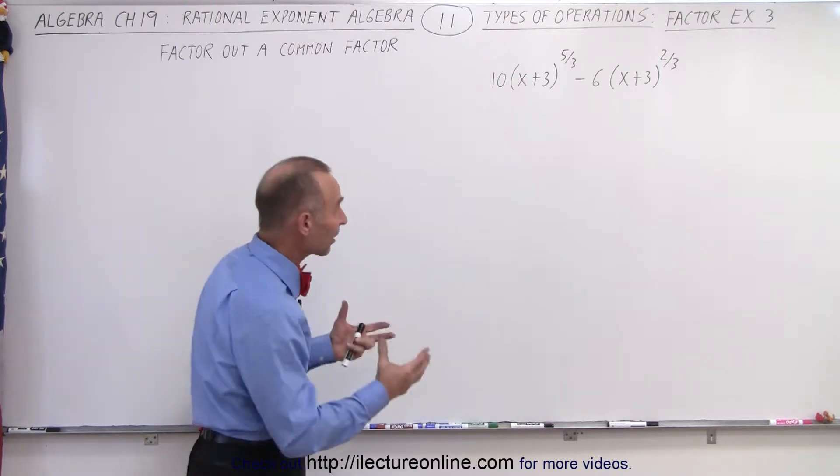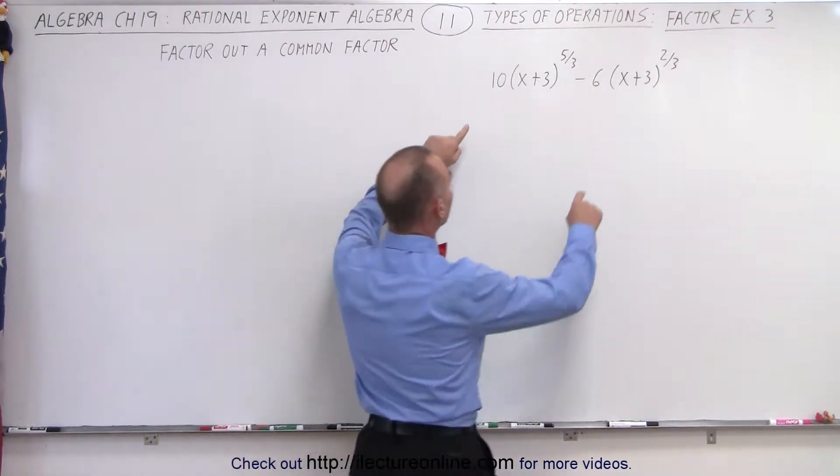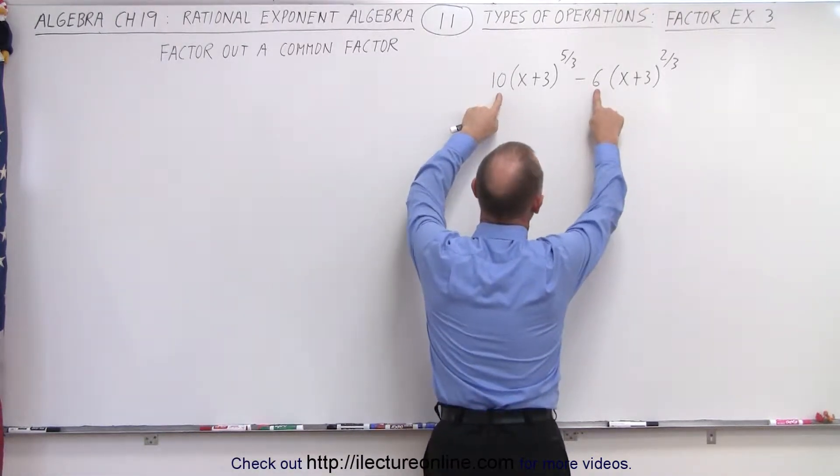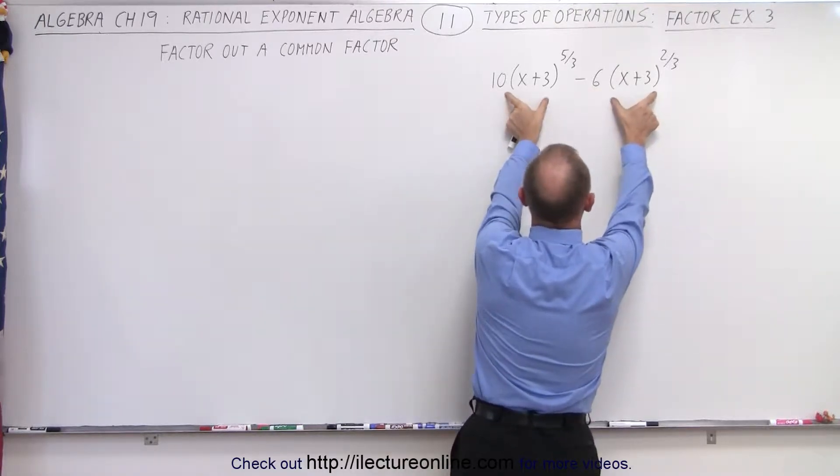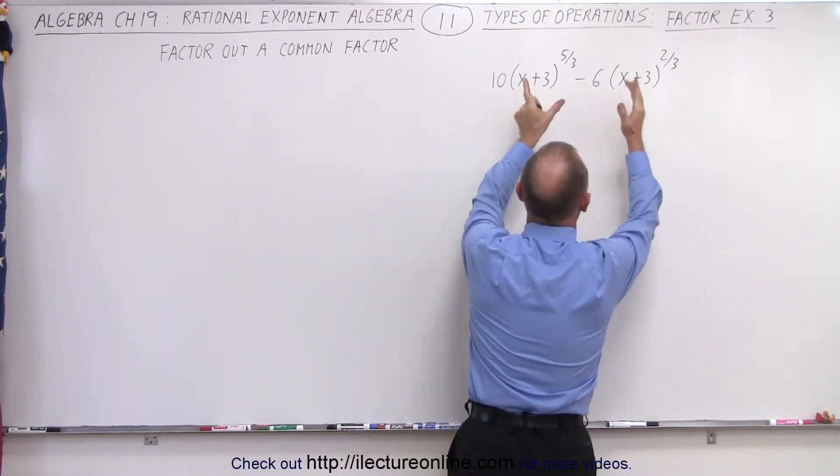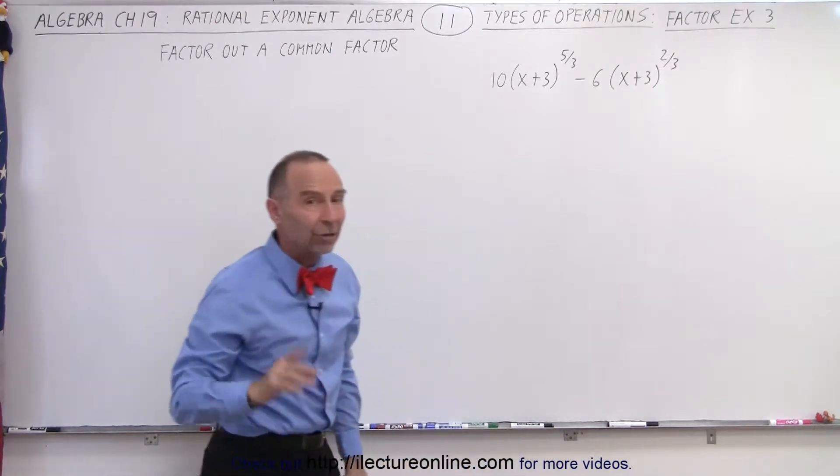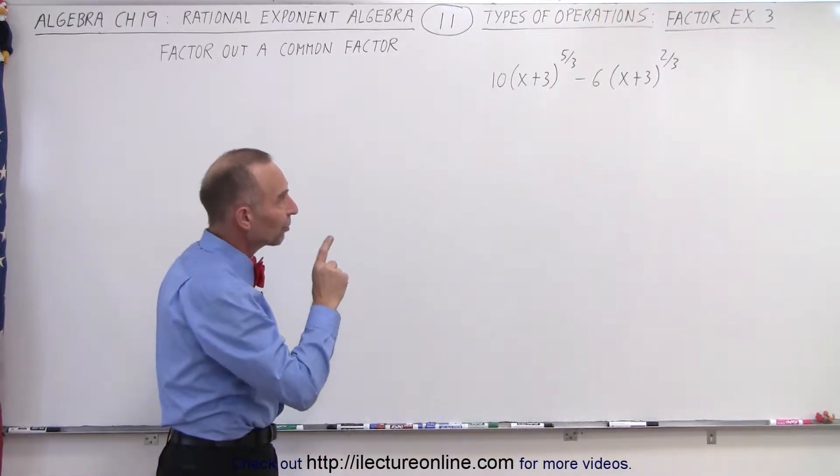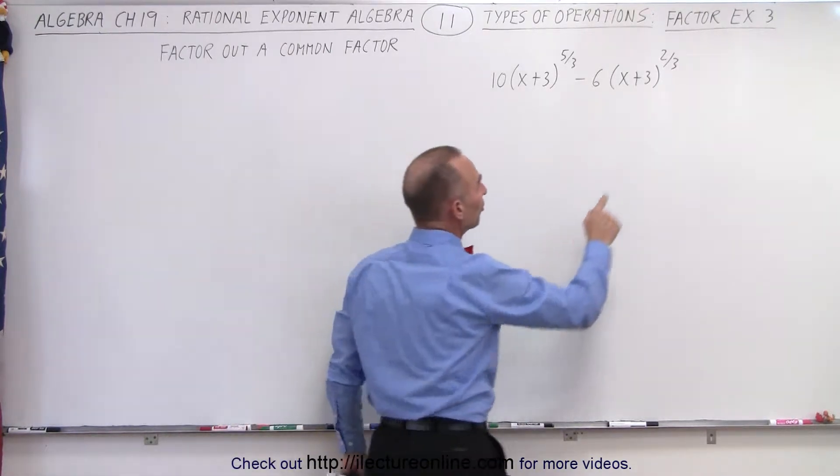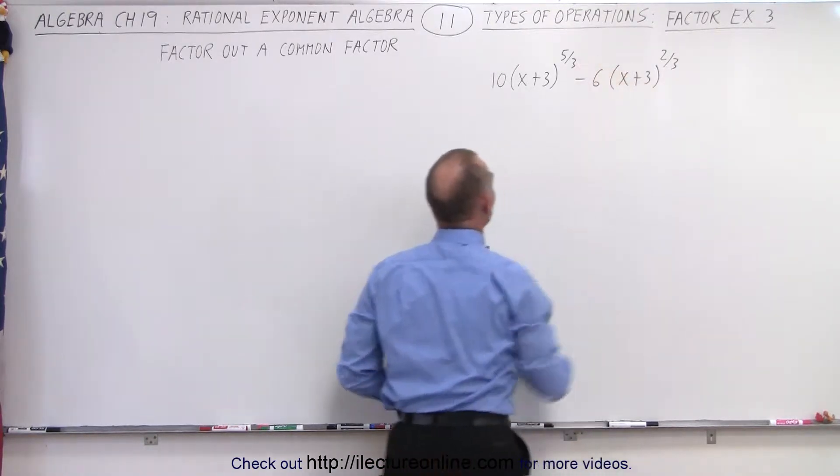When they tell us to factor out a common factor, we're going to factor out a common factor with the numbers 6 and 10, and we're going to factor out a common factor for (x+3) to those exponents. The rule is that we find the expression that has the smallest exponent, which is this one. 2/3 is smaller than 5/3.